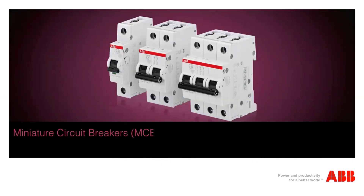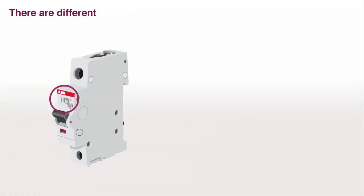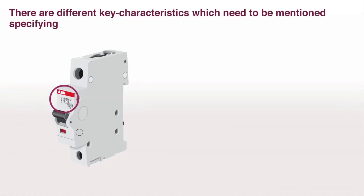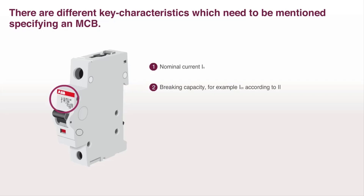Miniature circuit breaker, MCB, specification. There are different key characteristics which need to be mentioned when specifying an MCB: nominal current IN, and braking capacity — for example ICN according to IEC EN 60898-1.